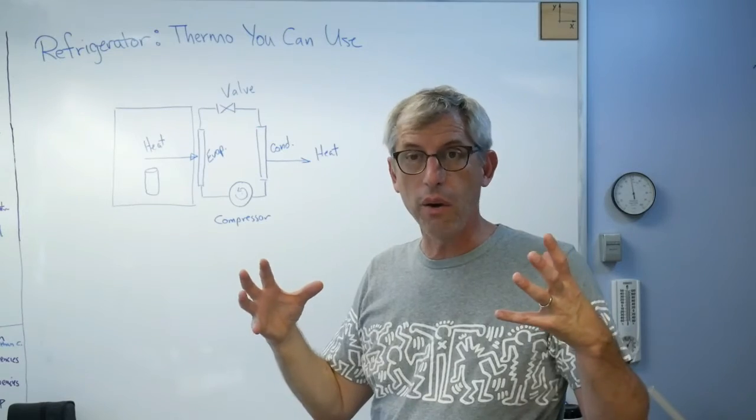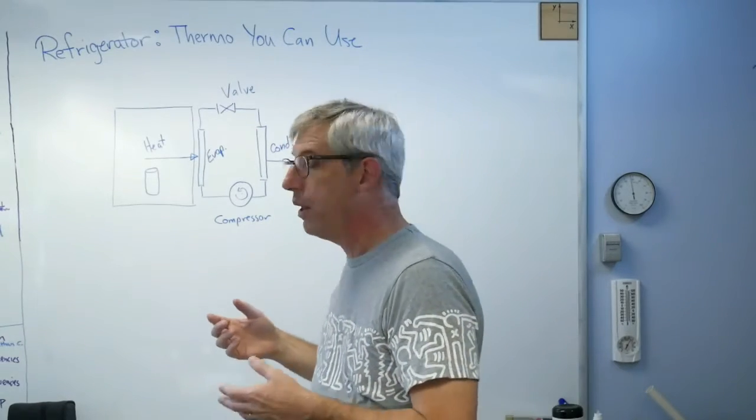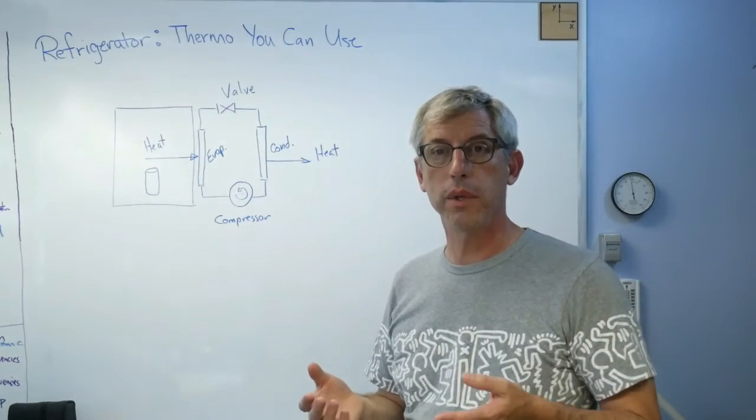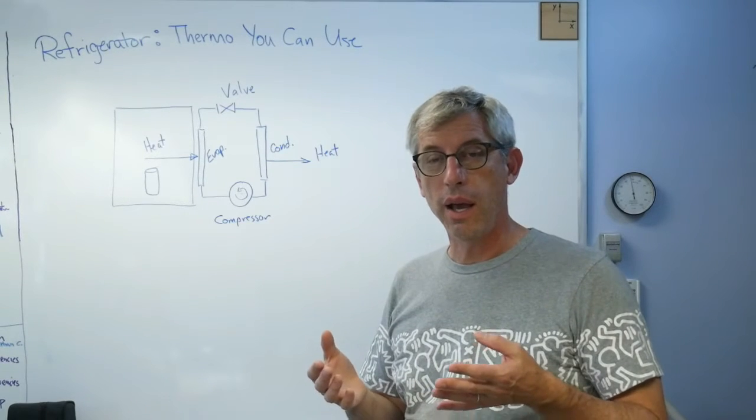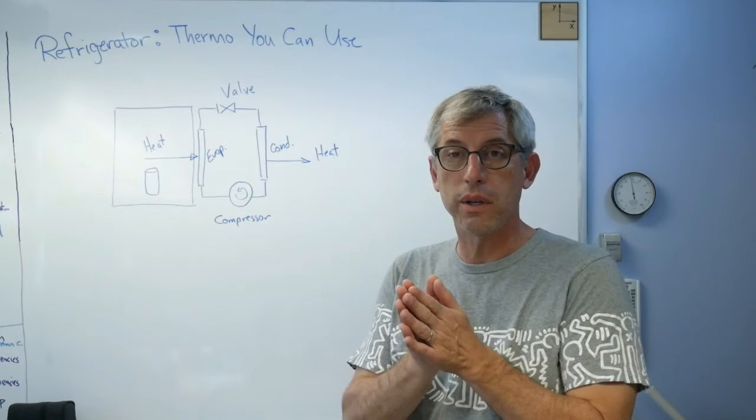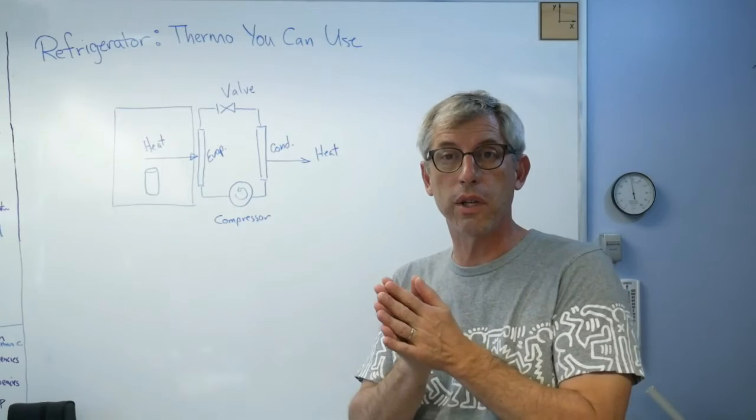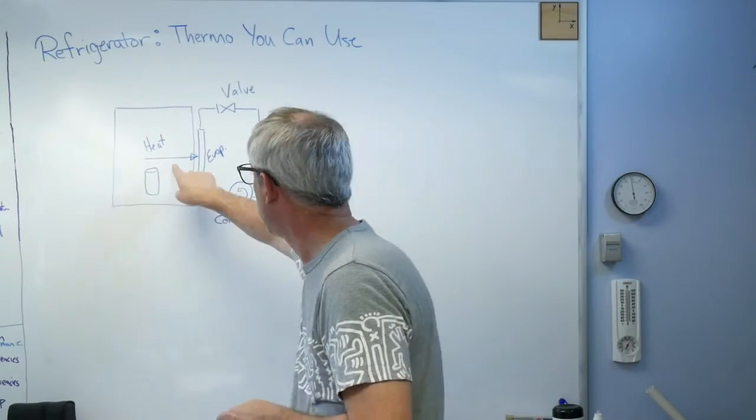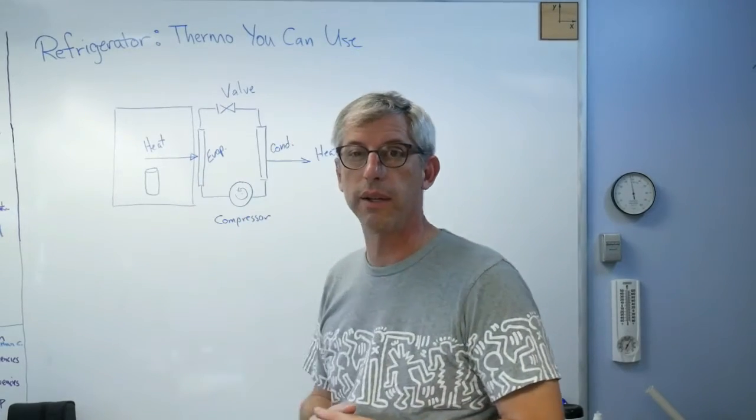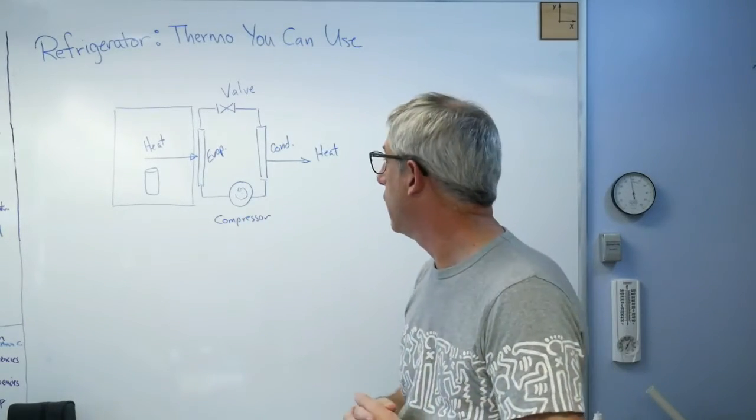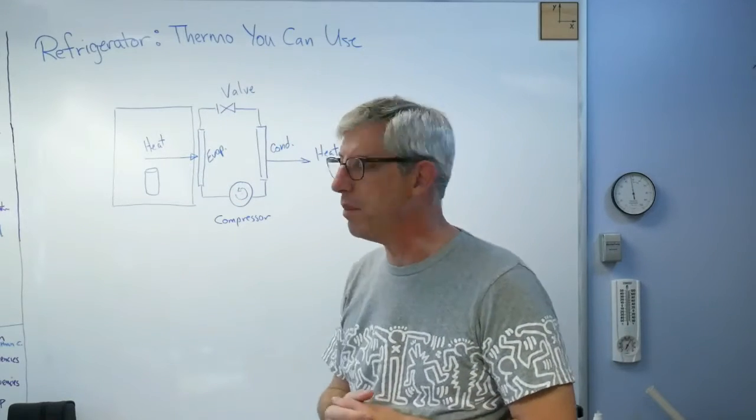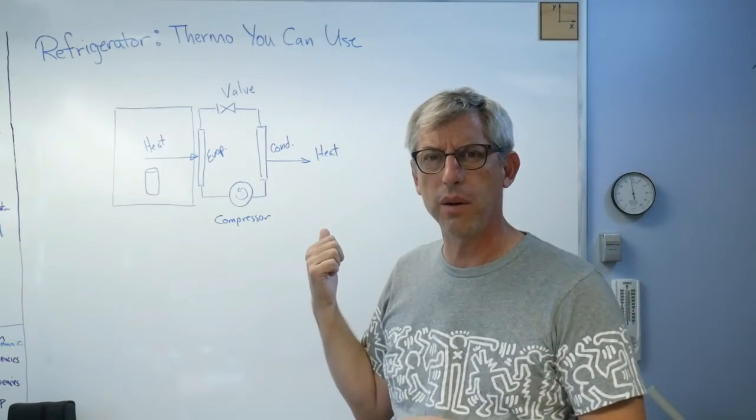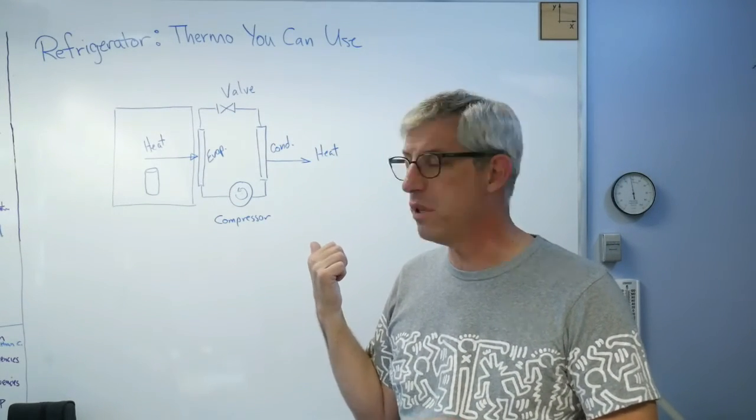The second law of thermodynamics says that energy does not move spontaneously from cold to hot. It only moves from hot to cold. Well, hot, cold, there goes your heat. That's a refrigerator, and there's a bunch of different kinds and they're all designed differently, but that's an awfully complicated way to explain a refrigerator.